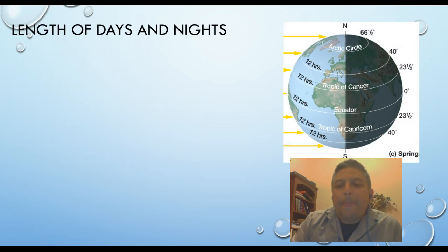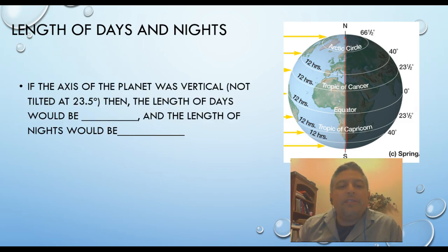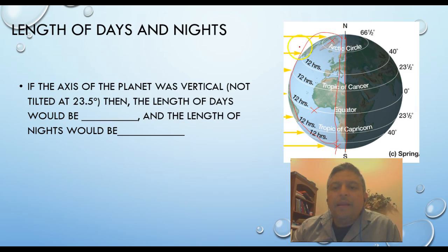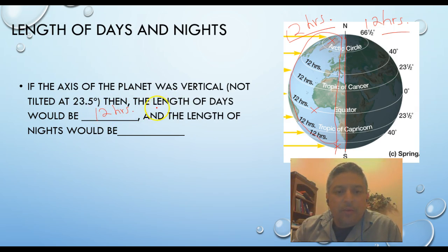Let's discuss the length of days and nights. Let's take a look at this hypothetical example: if the tilting of the planet didn't exist and we had a vertical axis — not tilted at 23.5 degrees — then it wouldn't matter where you were. You could be on the Arctic circles, on the south pole, or close to the equator. If the planet's axis was vertical, it would be 12 hours of daylight and 12 hours of nighttime regardless of where you were located on the planet.